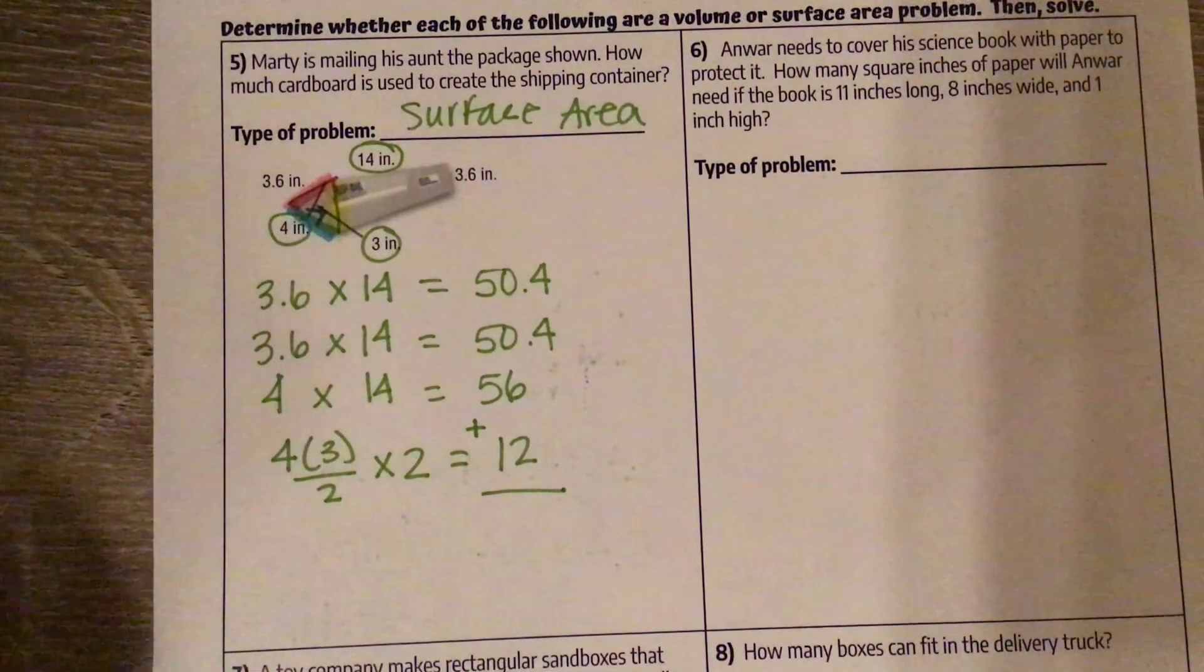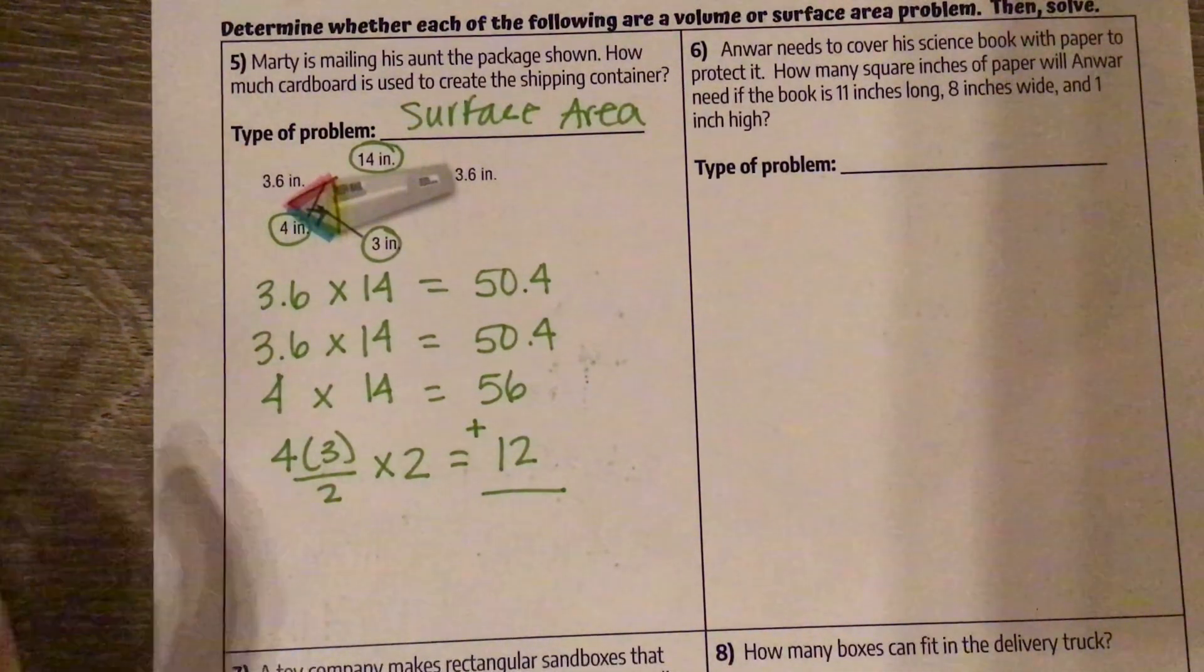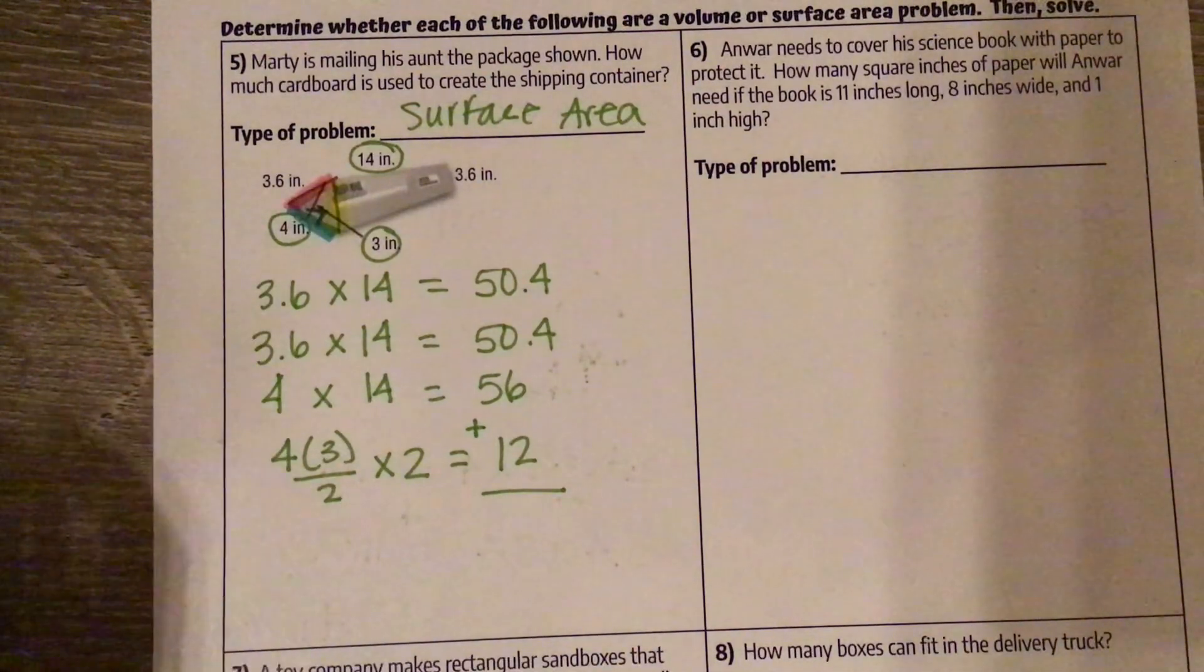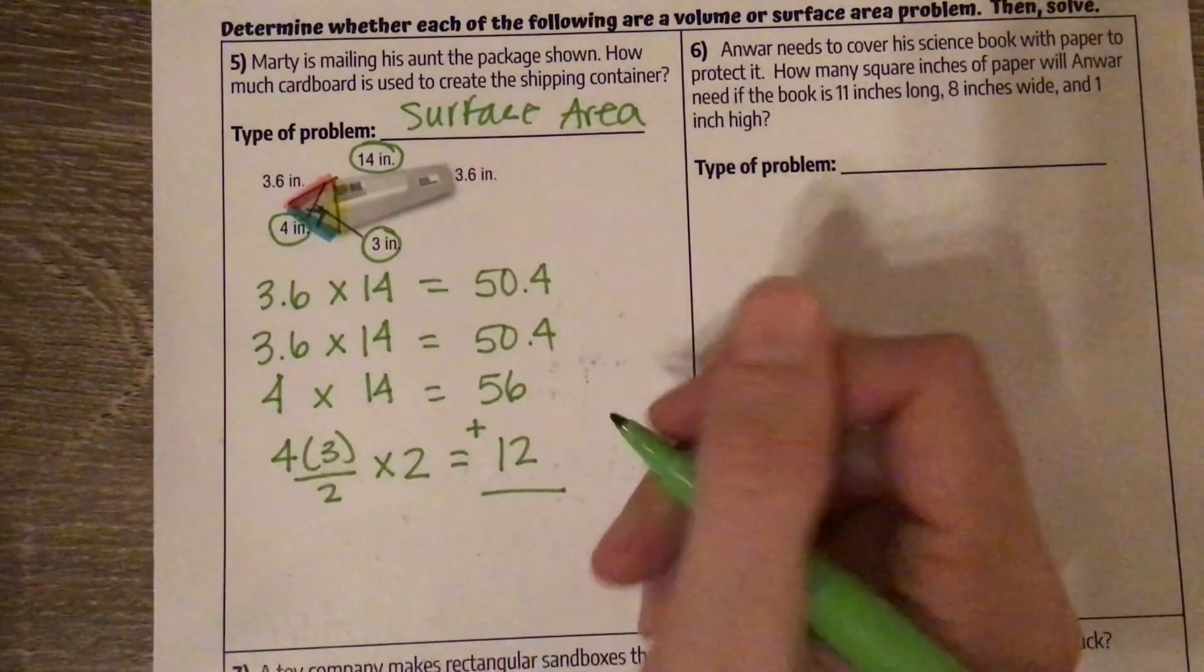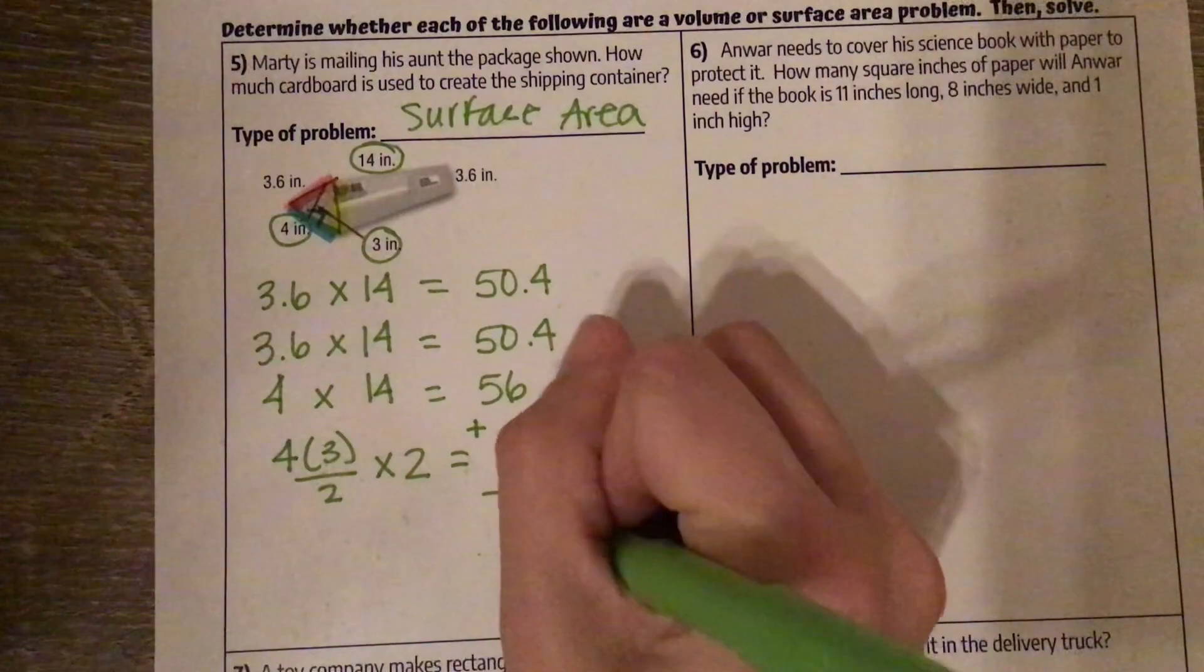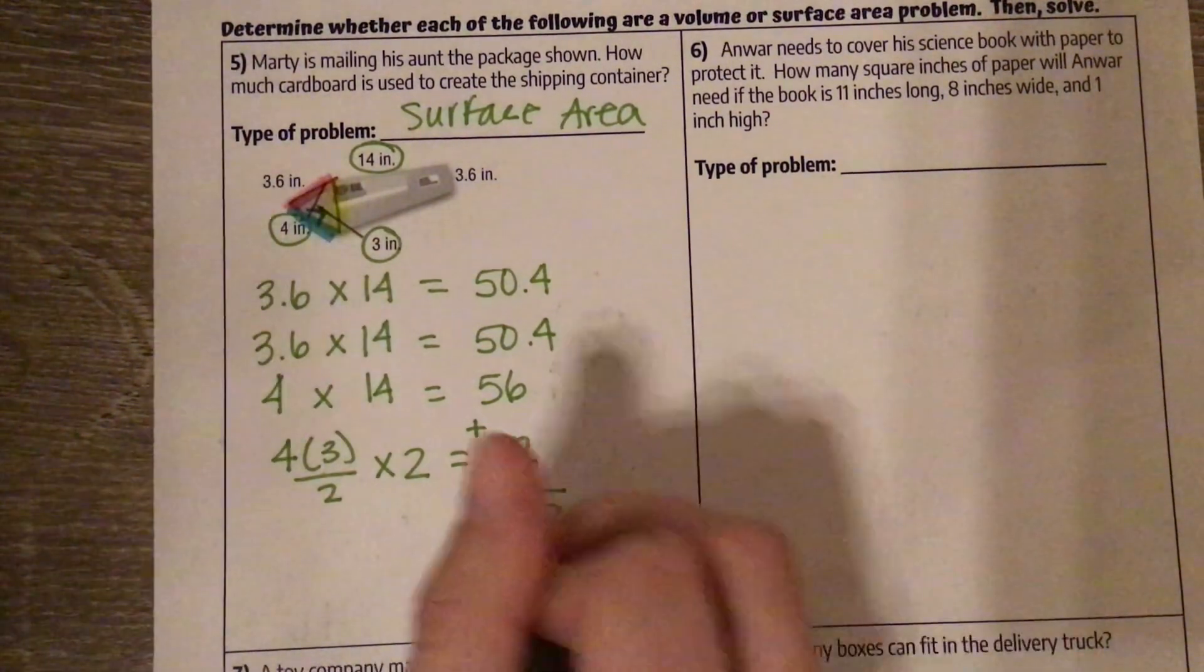And we add these all together. So 56 plus 12 plus 50.4 plus 50.4. And I get 168.8 inches squared.